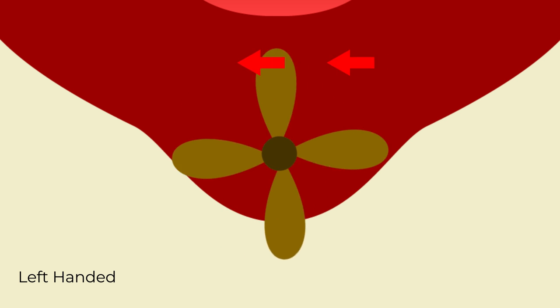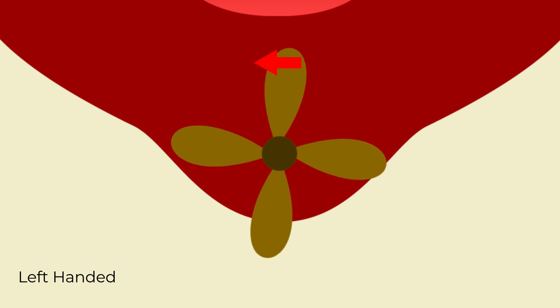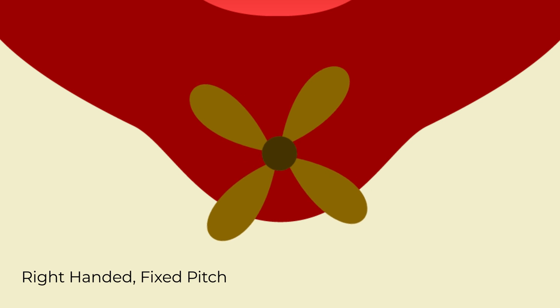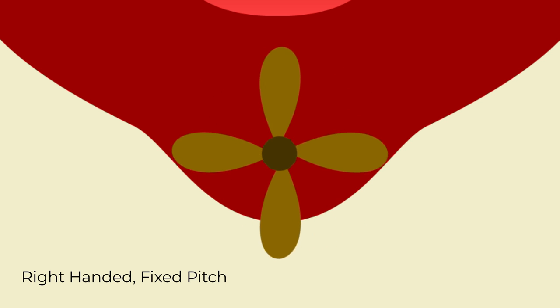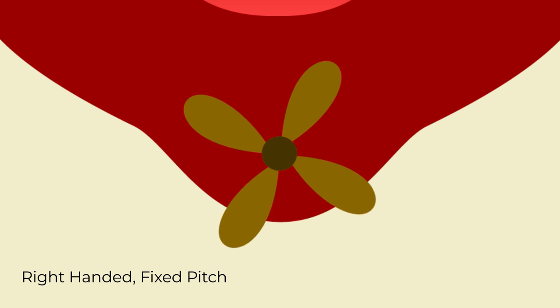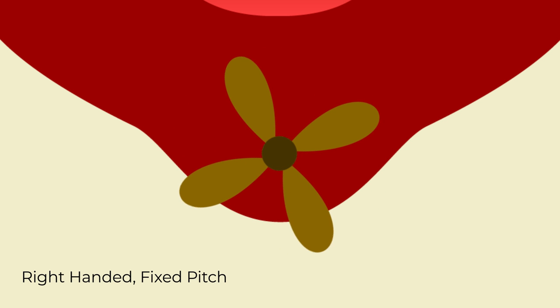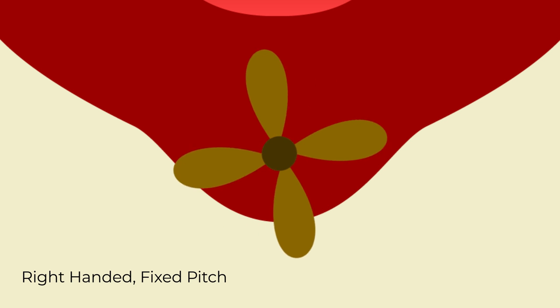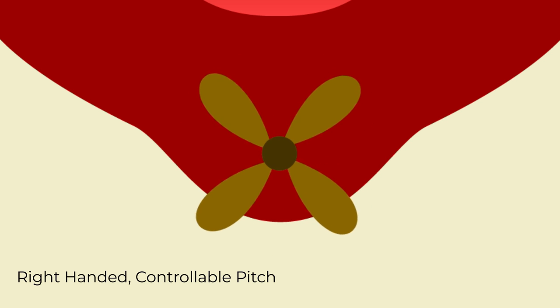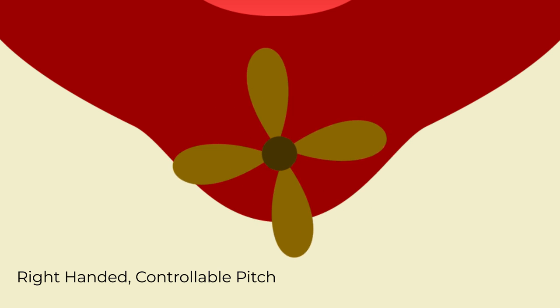Next, we need to think about what happens when that propeller runs astern — this is going to vary depending on whether it's fixed or controllable pitch. If it's right handed, spinning clockwise, and it's a fixed pitch, it's going to have to spin anti-clockwise to run astern. If it's a controllable pitch however, when it's running clockwise ahead, it's still going to be running clockwise astern, because it's the pitch of the blades that changes rather than the direction of turning.